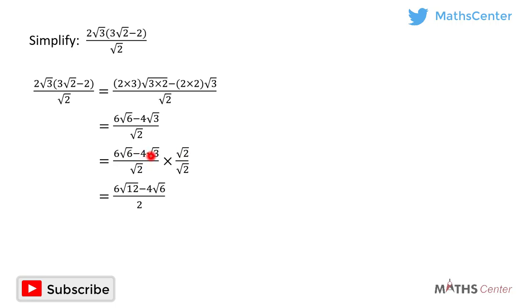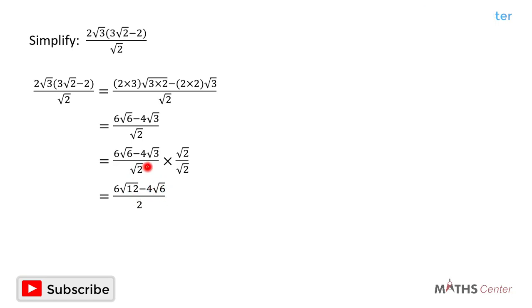Then negative 4 root 3 times root 2. The number in front of the square root is 1, so we have negative 4 times 1 which gives us negative 4. The number under the square root here is 3, and the number under the square root here is 2, so we have square root of 3 times 2 which gives us 6. The numerator is 6 root 12 minus 4 root 6, divided by square root of 2 times square root of 2, which gives us 2.